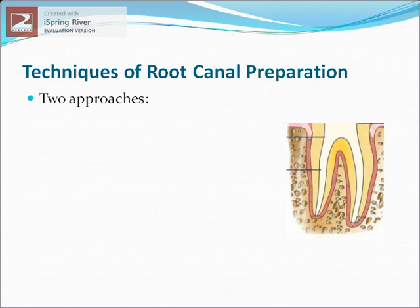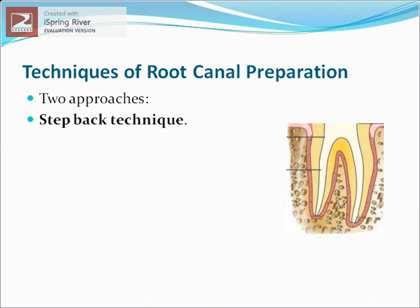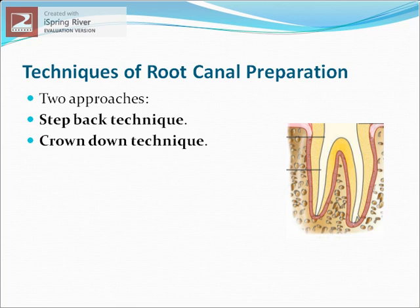There are two approaches used for biomechanical preparation. The first starts at the apex with fine instruments and works up to the orifice with progressively larger instruments — this is called the step-back technique, preparing the apical part first, then the coronal part. The second starts at the orifice with larger instruments and works toward the apex with smaller instruments — this is called the crown-down technique.